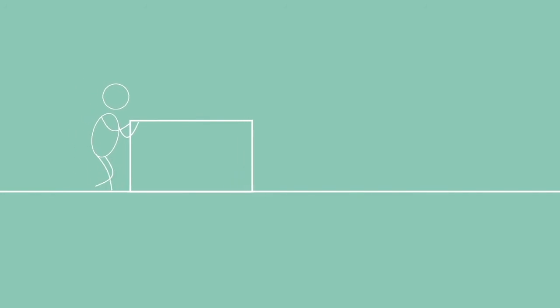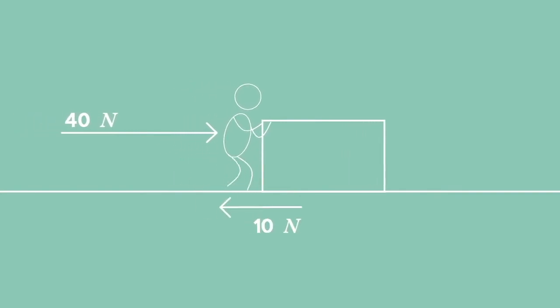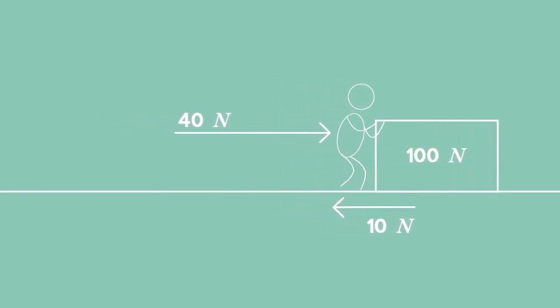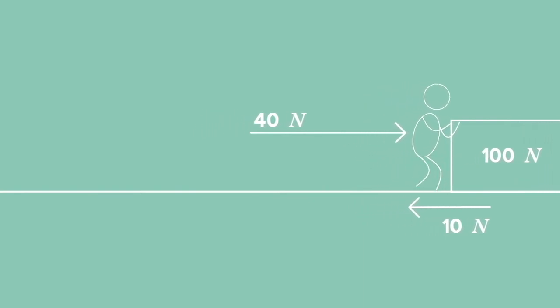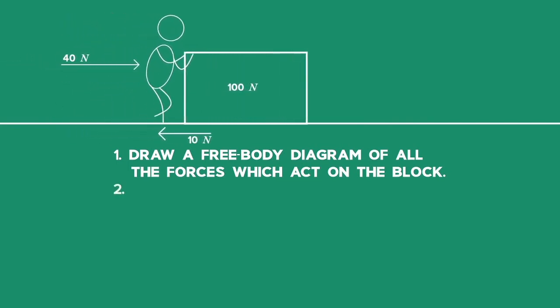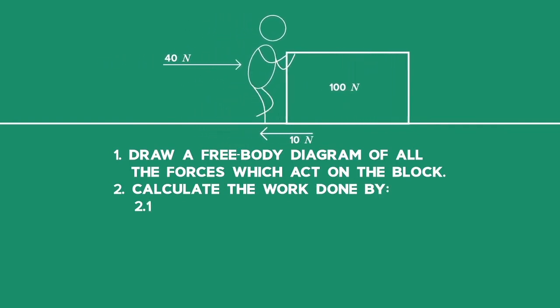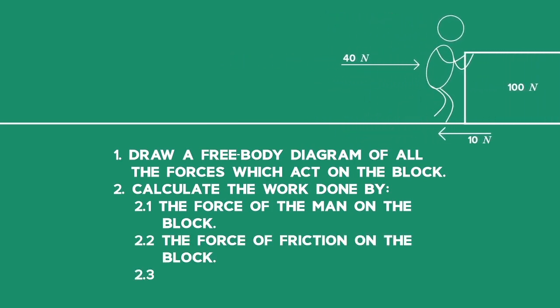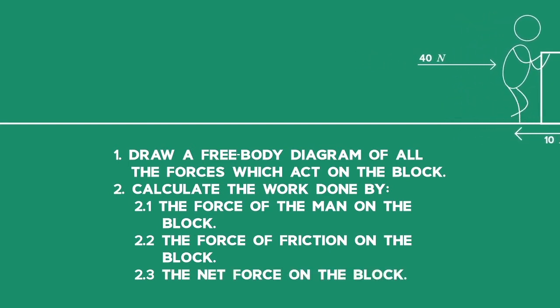Let's solve a problem. A man pushes a block forwards with a force of 40 newtons; 10 newtons of friction acts on the box; and the weight of the box is 100 newtons. We need to: (1) draw a free body diagram of all forces acting on the block; (2) calculate the work done by the force of the man on the block, the force of friction on the block, and the net force on the block.